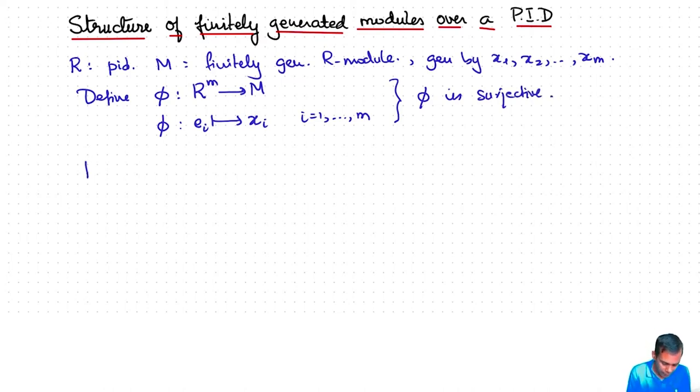And therefore, M is isomorphic to R^m mod kernel T. Now, kernel T is a submodule of M and since R is a principal ideal domain, it is also a Noetherian ring. And therefore, kernel T being a submodule of a finitely generated R module is again finitely generated.